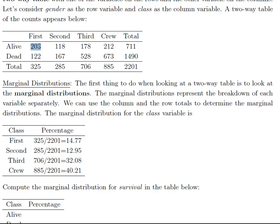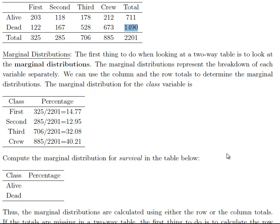I can interpret this as: 203 passengers were from first class and lived; 528 passengers were from third class and died. There were a total of 2,201 passengers — 711 of them lived and 1,490 of them died. We can look at the marginal distribution of class, which we just did, and we can also look at the marginal distribution of survival. When I say marginal distribution, you're dealing with either the row totals or the column totals — 711 out of 2,201 lived, and 1,490 out of 2,201 died. We can create a table just like this one for the survival variable.